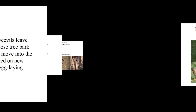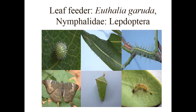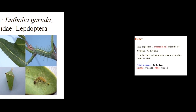Coming to leaf feeder — Euploea core (Nymphalidae, Lepidoptera) — a butterfly pest that causes severe defoliation of mango. Use any contact insecticide to control it.